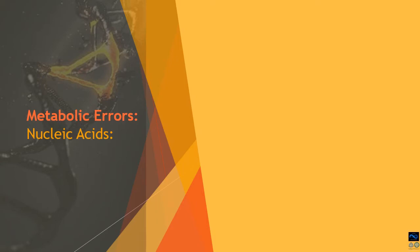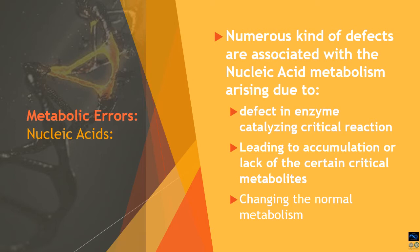For nucleic acids, several kinds of metabolic errors have been associated. They are due to defects in enzymes catalyzing critical reactions in nucleic acid metabolism — whether in the de novo pathway, salvage pathway, or degradation pathway. Any enzyme involved in any of these pathways can have a defect leading to the metabolic error. It may also be due to the accumulation or lack of certain critical metabolites, or due to changes in normal metabolism taking a different route.